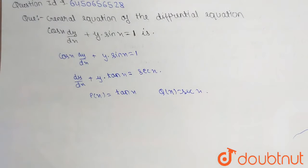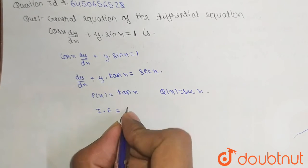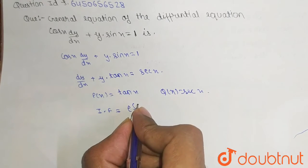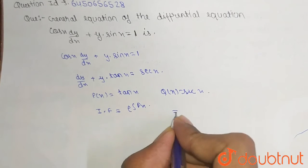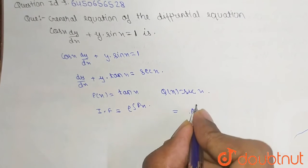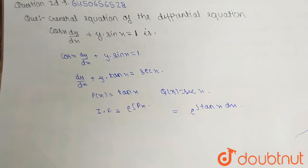So our integrating factor, IF, is equal to e to the power integration of P(x). So this will be integration of tan x dx. When we solve, integrate tan x dx...